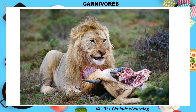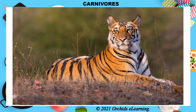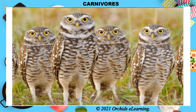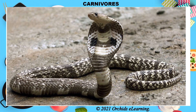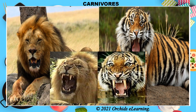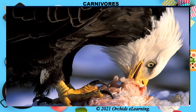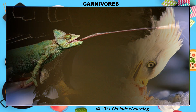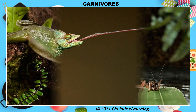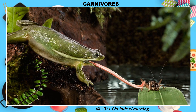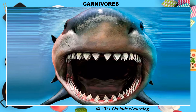Carnivorous animals or carnivores eat only the flesh of other animals. Lion, tiger, jackal, owl, eagle, snake, and spider are examples of carnivores. Lion and tiger have sharp and pointed front teeth called canines, along with sharp claws and powerful jaws to tear flesh. Carnivorous birds such as eagle and hawk have curved, pointed beaks to tear flesh. Carnivores such as chameleon and frog have a long sticky tongue to catch insects. Sharks have several small sharp teeth to bite off chunks of flesh, and snakes swallow their prey whole.